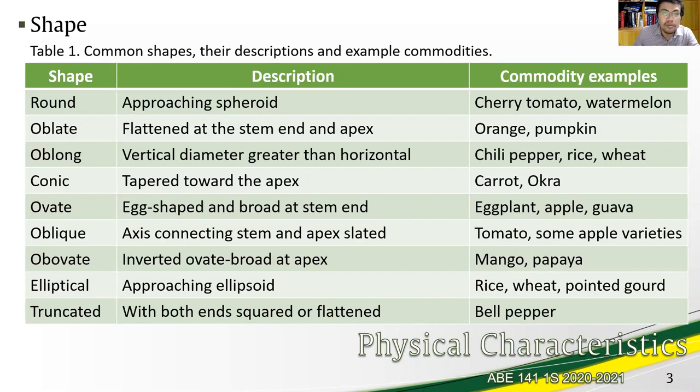Obovate inverted ovate broad at apex we have mango and papaya. Elliptical is approaching ellipsoid we have rice, wheat and pointed gourd. Truncated both ends are squared or flattened and we have bell pepper.